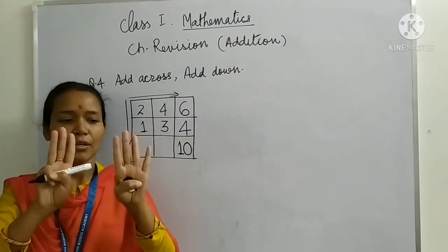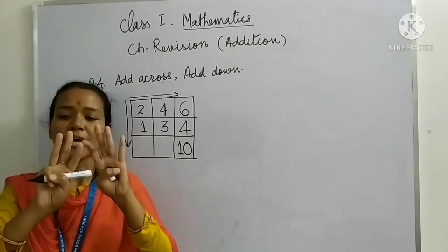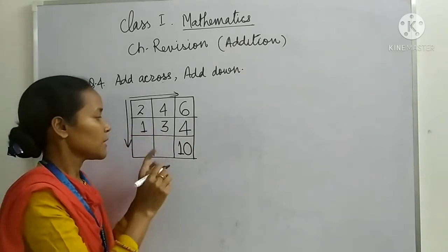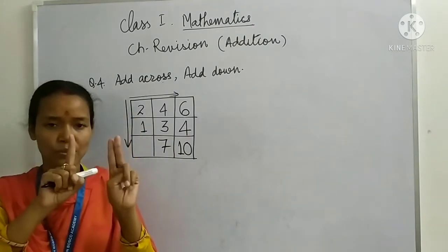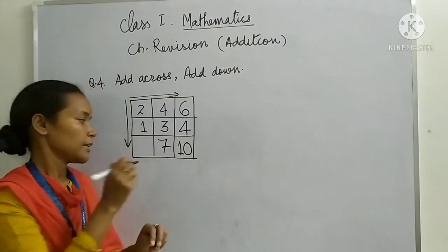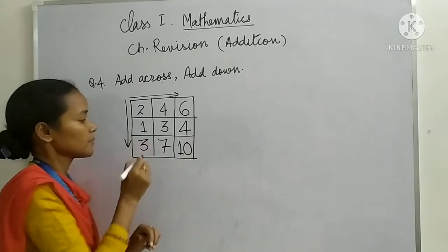4 plus 3. Counting 1, 2, 3, 4, 5, 6, 7. 4 plus 3 is 7. 2 plus 1. Counting 1, 2, 3.